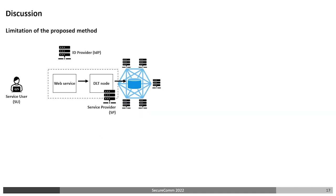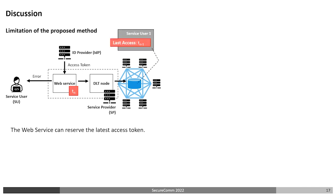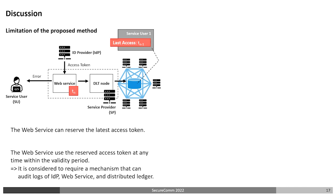I'm going to explain the limitations of the proposed method. After the web service receives an access token with issuance time TN, if it returns an error to the service user, the web service can reserve the access token. Since the last access in the distributed ledger is TN-1, the web service can use the reserved access token at any time within the validity period. Although this issue is future work, it is considered to require a mechanism that can audit logs of the ID provider, web service, and distributed ledger.